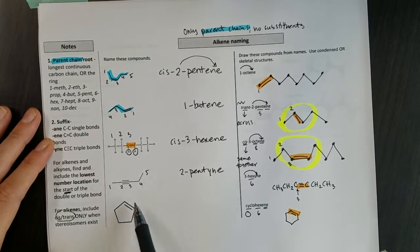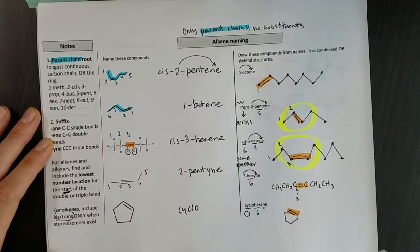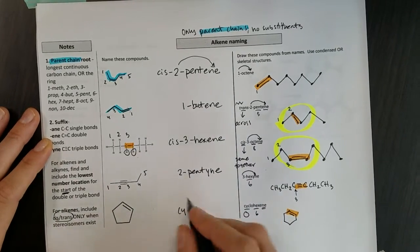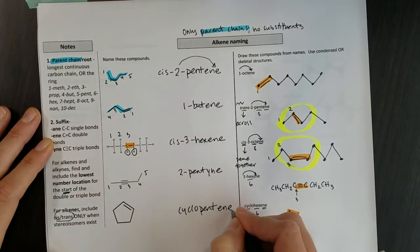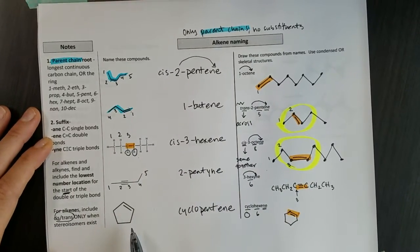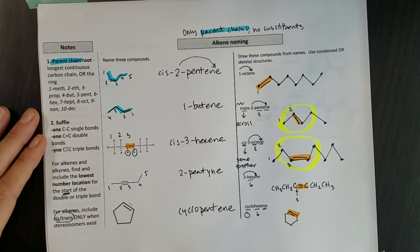Last of all, I have a ring with five carbons in it. So as soon as I see a ring, I'm writing down cyclo so I don't forget that. Then I see five. So I say pent with an -ene. And just like when we had one substituent, when we just have our one double bond here, we don't need to say where it is. So cyclopentene is good for the name there.